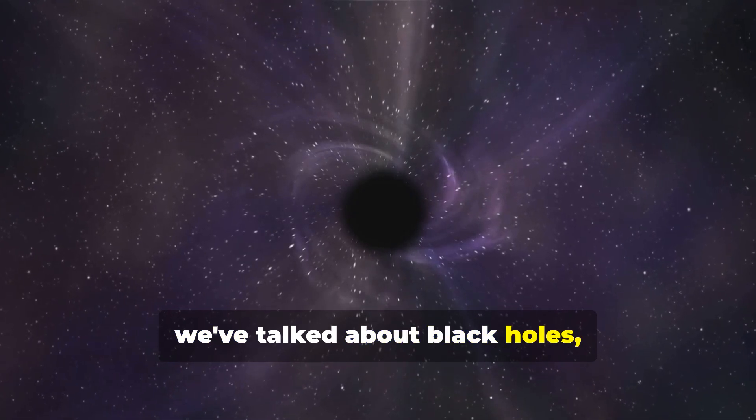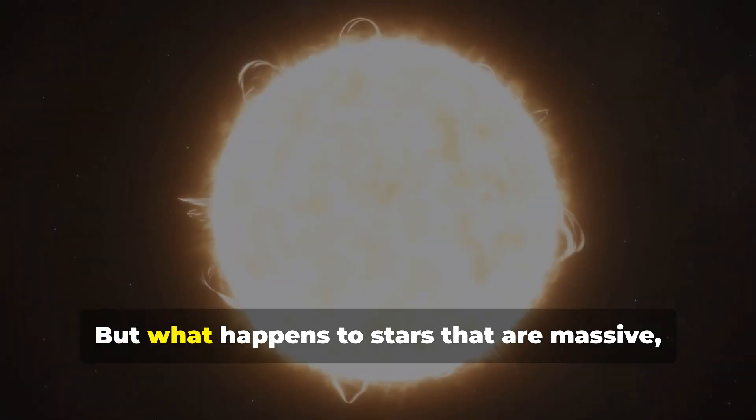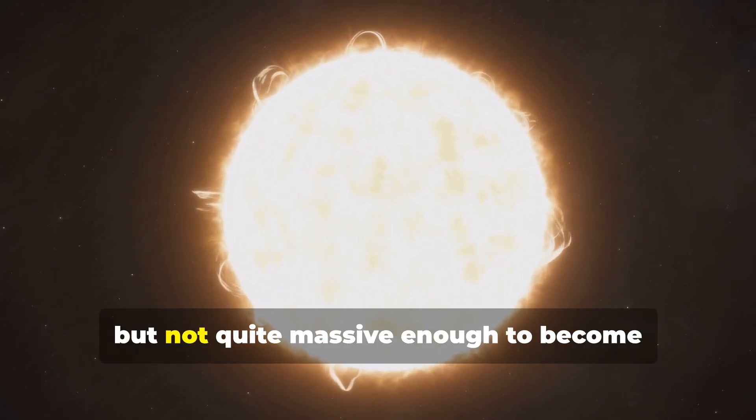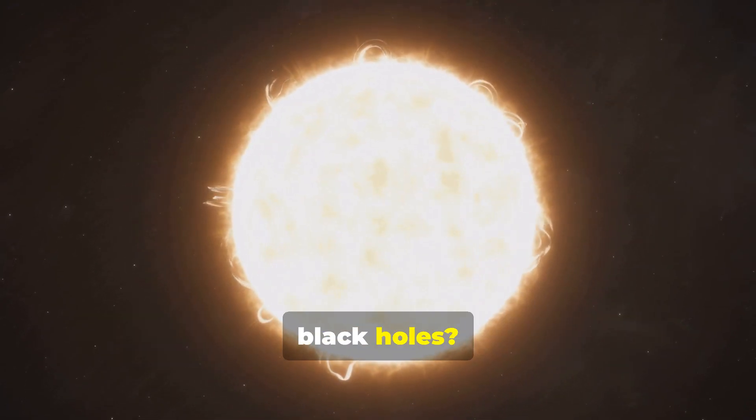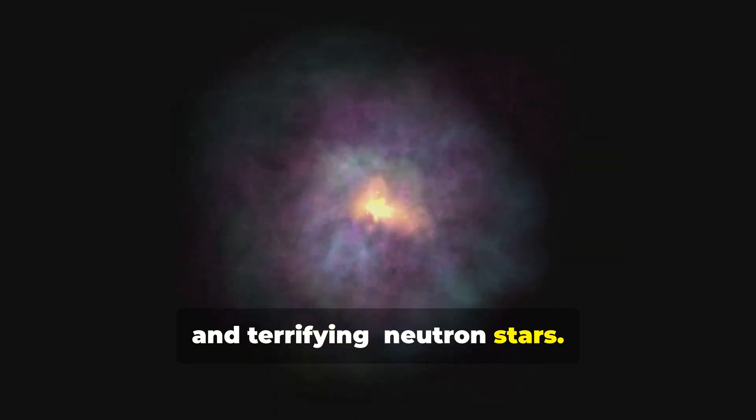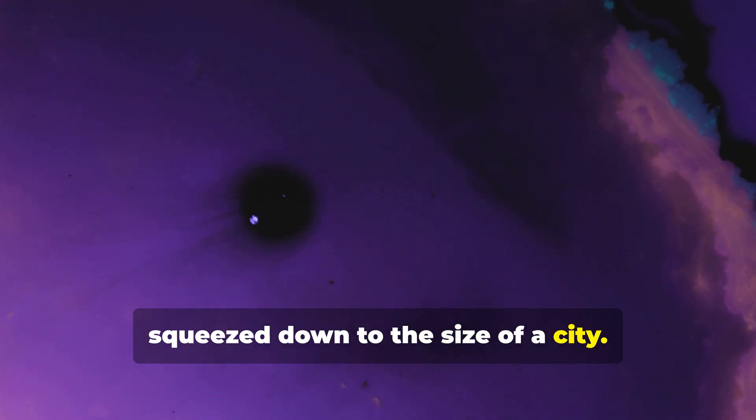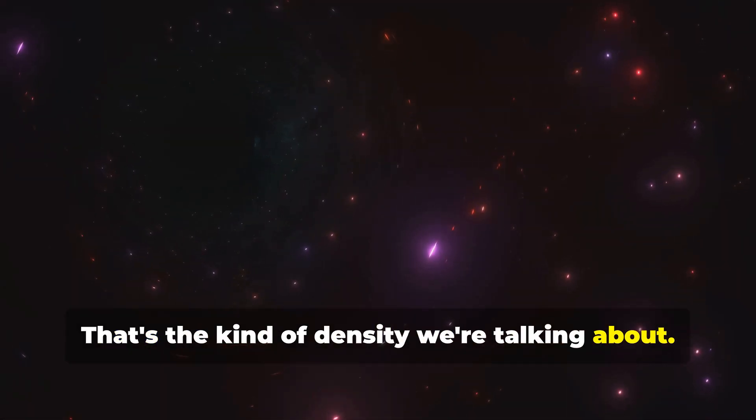So, we've talked about black holes, those cosmic monsters that gobble up everything in their path. But what happens to stars that are massive, but not quite massive enough to become black holes? They become something equally fascinating and terrifying, neutron stars. Imagine this, a star more massive than our sun squeezed down to the size of a city. That's the kind of density we're talking about.